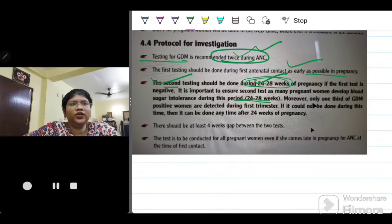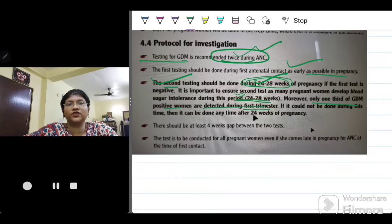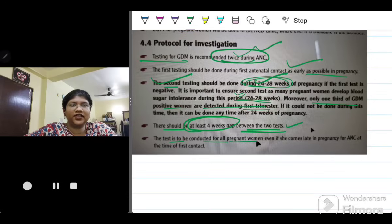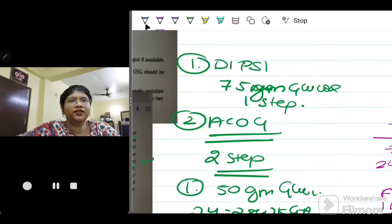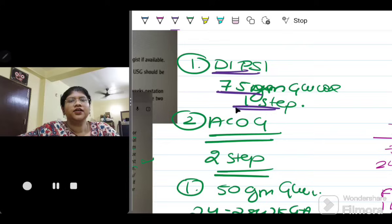This is done twice during antenatal visit. The first is at the first antenatal contact, and the second test is done at 24 to 28 weeks of pregnancy. Only one-third of the GDM positive women are detected during first trimester, and that is why repeating at 24 to 28 weeks where the highest level of insulin resistance is seen helps us to diagnose more GDM cases. Remember that you should at least have 4 weeks gap between the two tests. A test is conducted for all pregnant women even if she comes late in pregnancy at the first contact period.